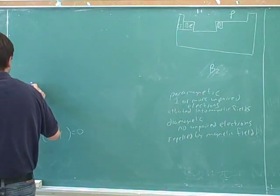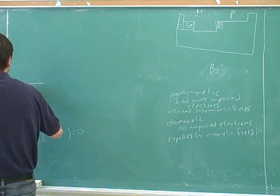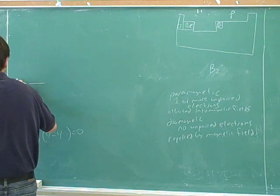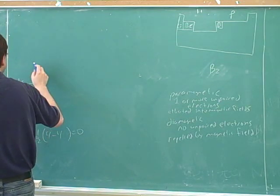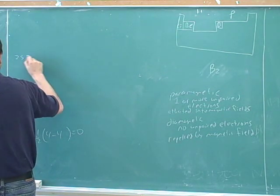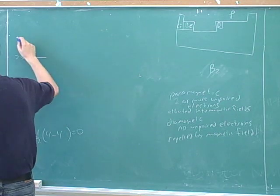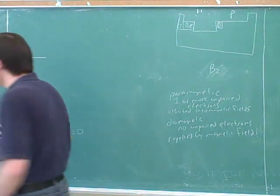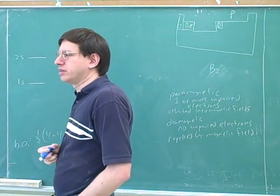All right, so now we need to use more space on our paper. So down here I can put 1s and then here we can put 2s. And now we're going to have to start using the 2p orbitals.